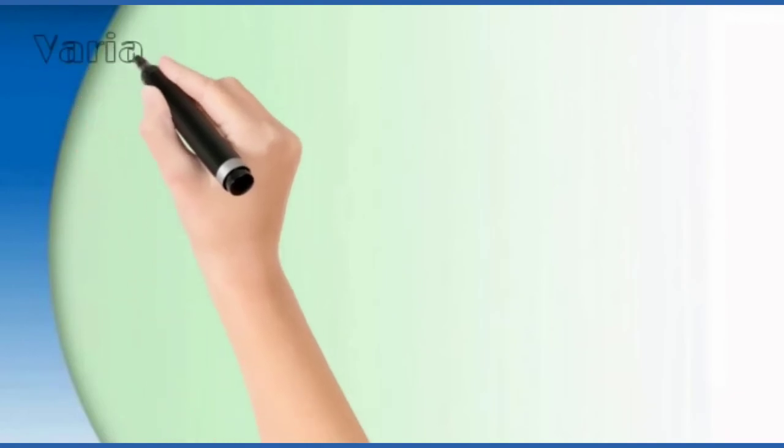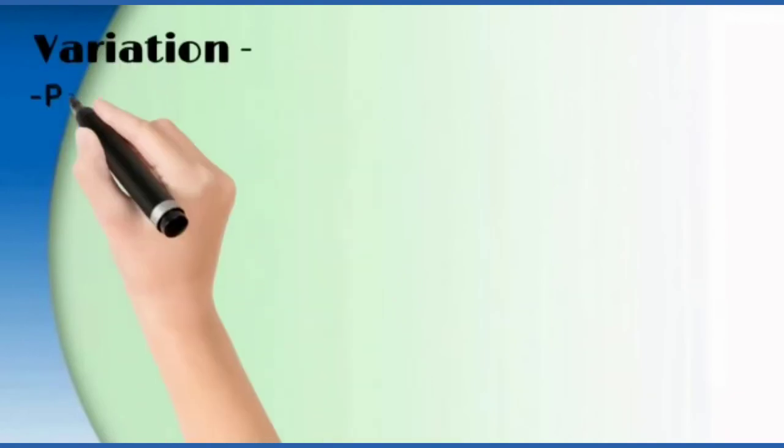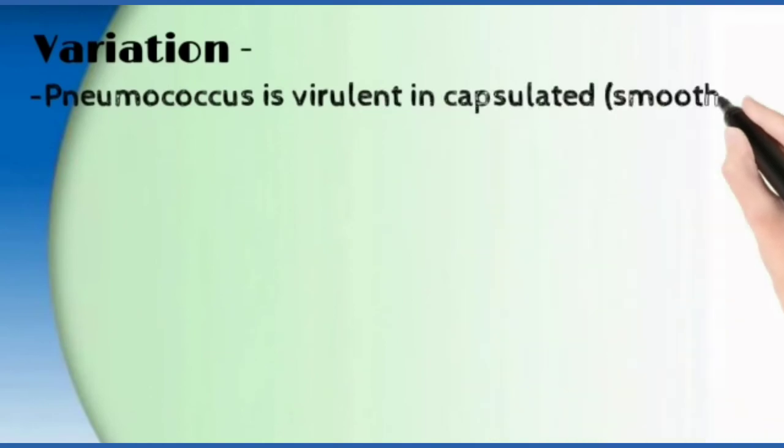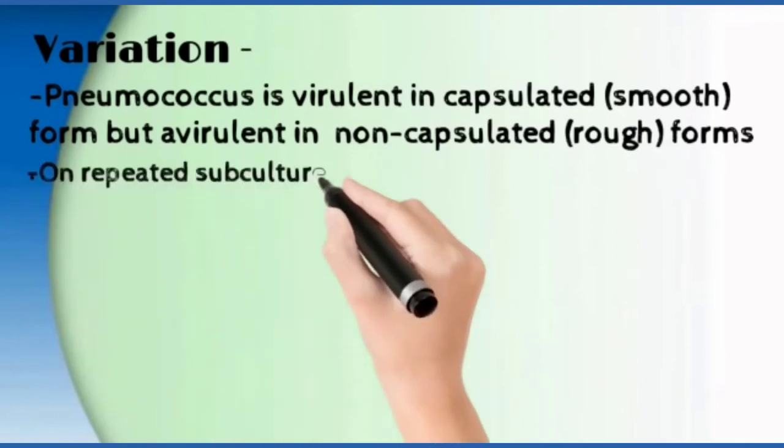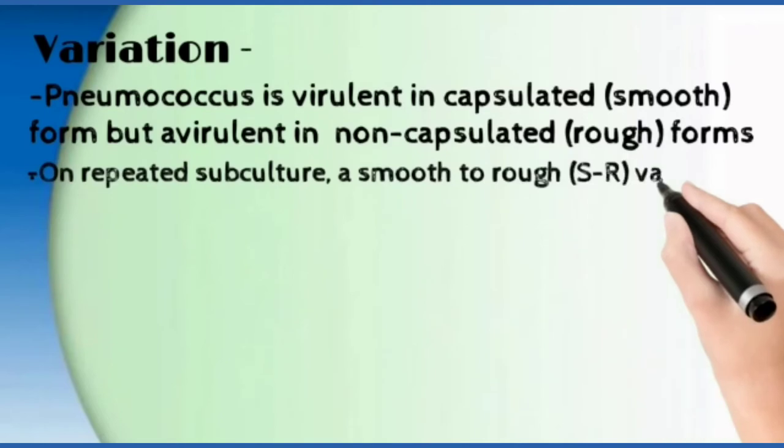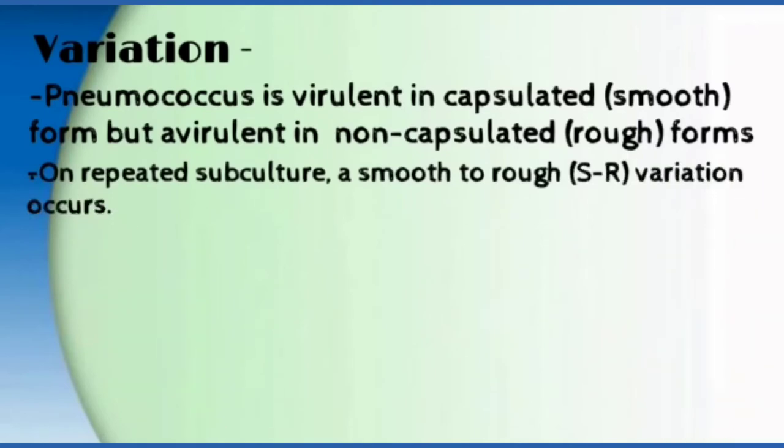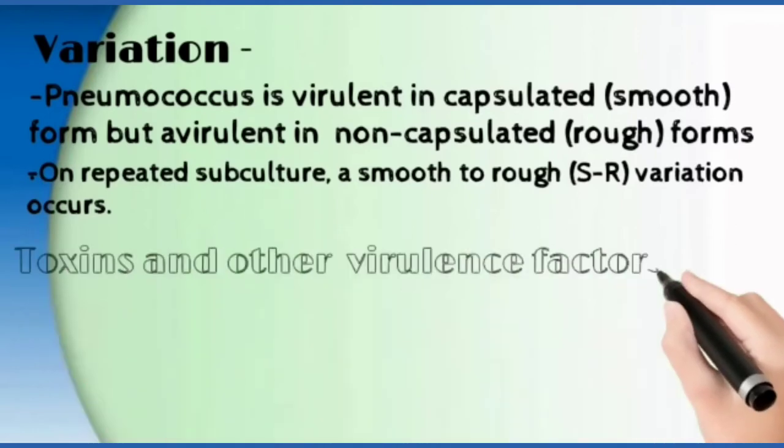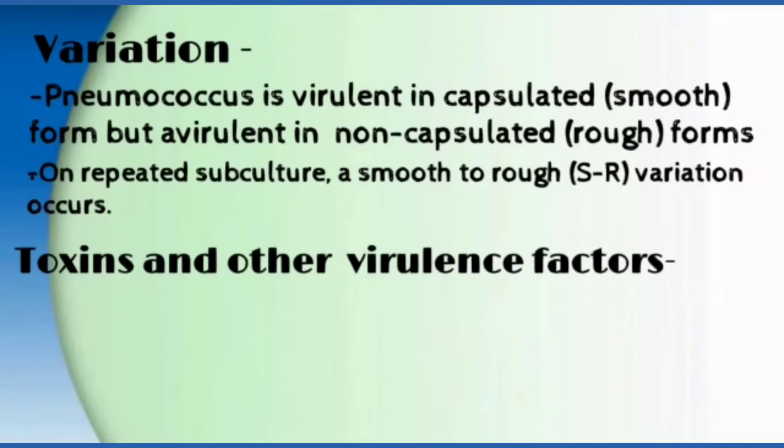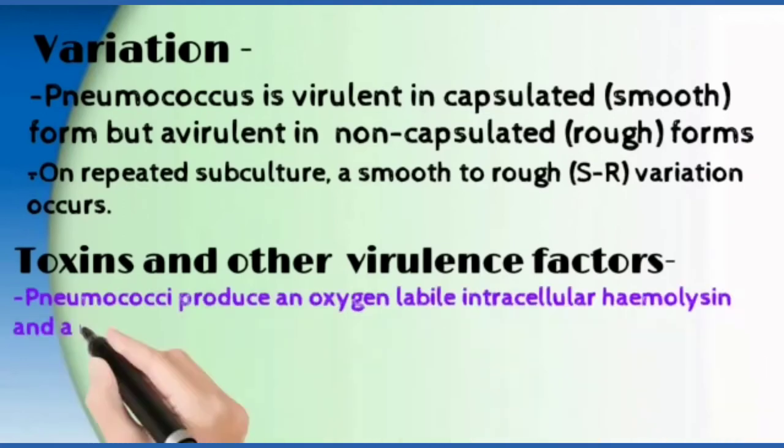Now about variations. Pneumococci is virulent in encapsulated form but avirulent in non-capsulated rough form. On repeated subculture, a smooth to rough variation occurs. Regarding toxins and virulence factors, pneumococci produces an oxygen-labile intracellular hemolysin and a leukocidin.